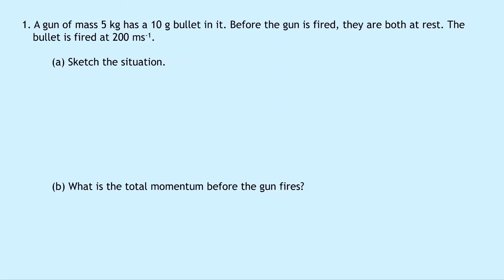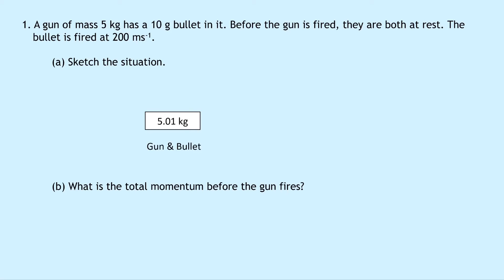Let's get started. Question one says that a gun of mass 5 kilograms has a 10 gram bullet in it. Before the gun is fired, they are both at rest. The bullet is fired at 200 meters per second. For part a, we sketch the situation: we've got a mass of 5.01 kilograms — that's the 10 gram bullet, which is 0.01 kilograms, added to the 5 kilogram gun — giving us the gun and bullet combined.